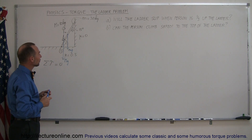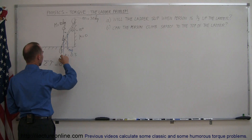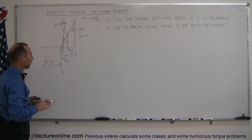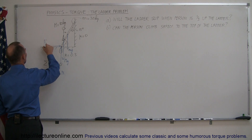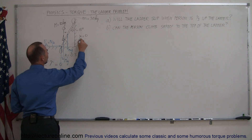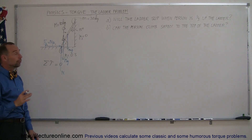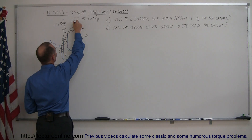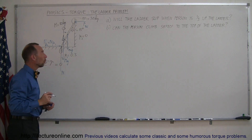Then we have the floor pushing back — that would be the normal force. The floor also produces a friction force pushing back against the ladder in the horizontal direction. That would be the friction force, which is equal to the normal force times mu sub 1. And then there's one more force: the ladder pushing against the wall and the wall pushing back. Since there's no friction, that force has to act perpendicular — let's call that the force of the wall.